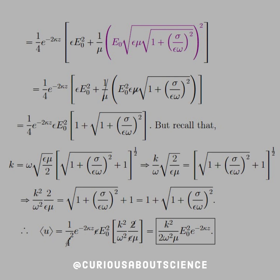And now we're able to factor out an epsilon E naught squared from the bracket. So we're left with one plus square root of one plus sigma over epsilon omega squared. And what we need to recall is that K is equal to omega epsilon mu over two times the square root nonsense plus one. So we're pretty similar in the things here and all we're trying to do is form match them.